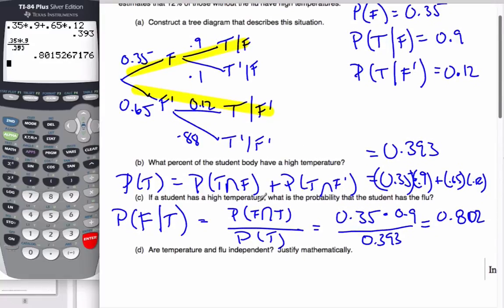So then, finally, are temperature and flu independent of each other? Well, if they are independent of each other, whether I have a high temperature or not shouldn't affect my probability of having a flu. And what I can say is that if the probability of flu given I have a temperature equals just the probability of having a flu, if that's true, then they're independent.